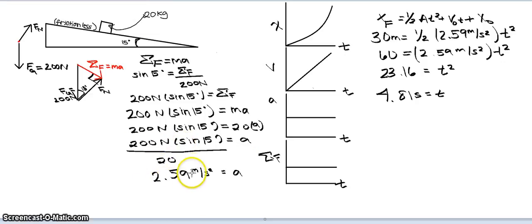I plugged in for our mass, since we already know that. It's 20 kilograms, and then I divided 20 from both sides. And, ultimately, I got 2.59 meters per second squared is our acceleration. That just means that for every second that passes, the velocity increases by 2.59 meters per second.